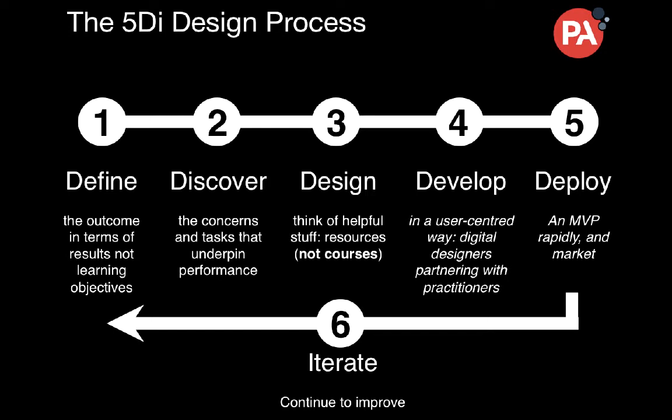Resources, not courses. Develop in a user-centered way — digital designers partnering with practitioners. Involve your audience in the process; design with the audience, for the audience. Then deploy an MVP — minimum viable product. It's a recognition that you're not going to get it right first time. There is no stakeholder sign-off process that's going to ensure that. Instead, deploy something that's 80% there and then iterate it. Involve your audience in the feedback and improve it.